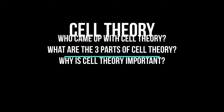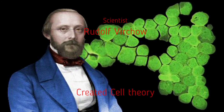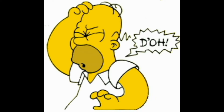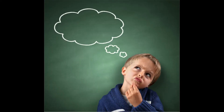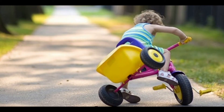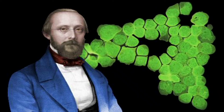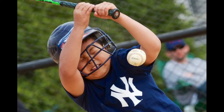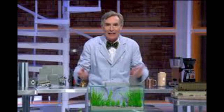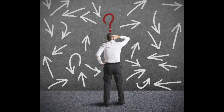Cell theory comes from a scientist named Rudolf Virchow. A few things to know about Virchow: he loved science, and if you love science you're going to make theories, test them, and they're going to fail. Many times Virchow failed. He was a politician, he was a scientist, he worked in the medical field.